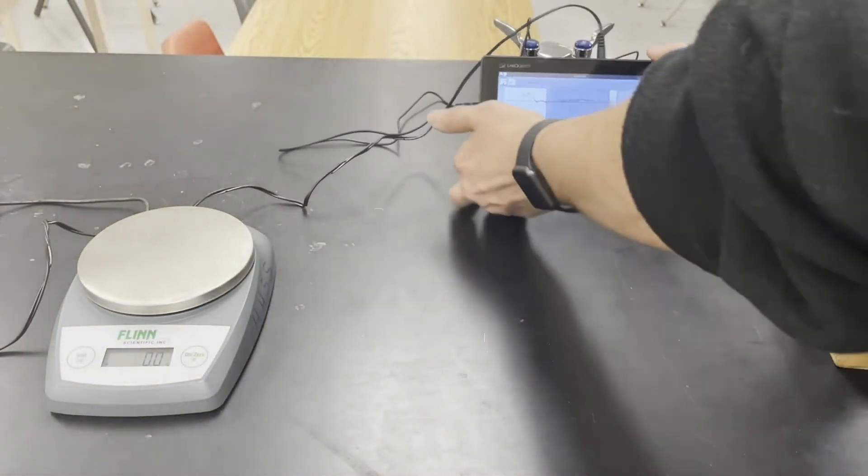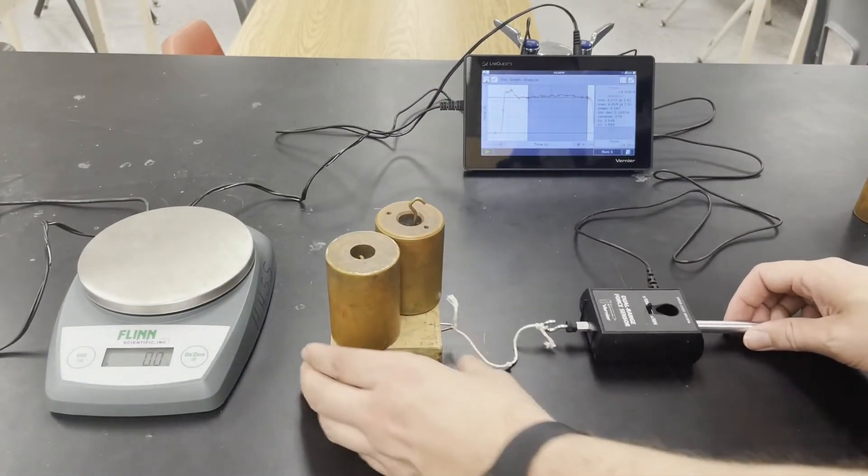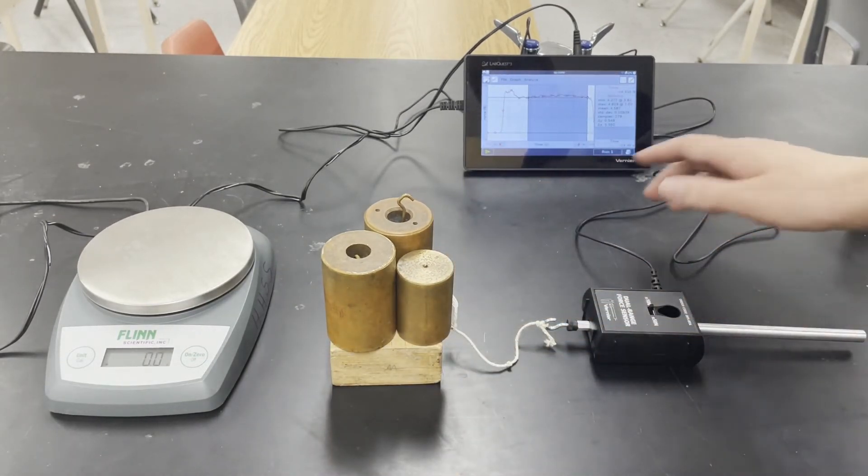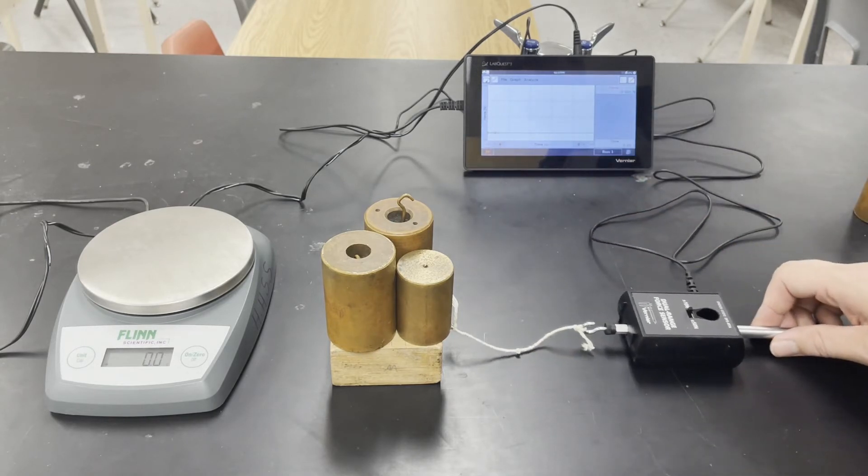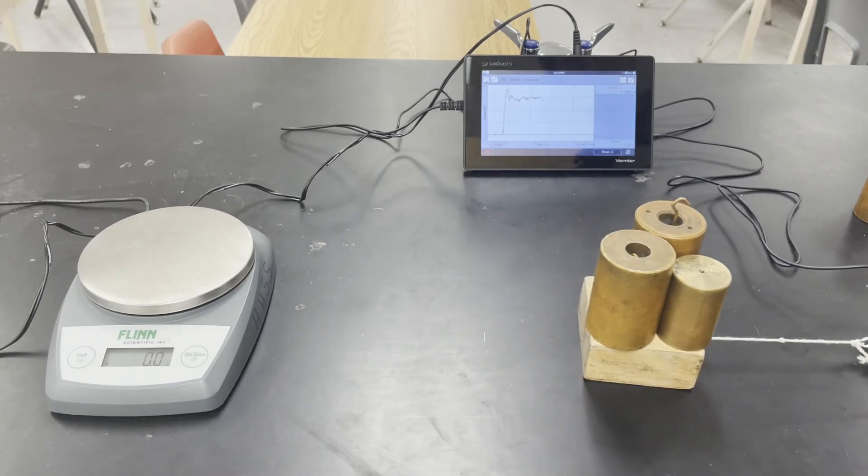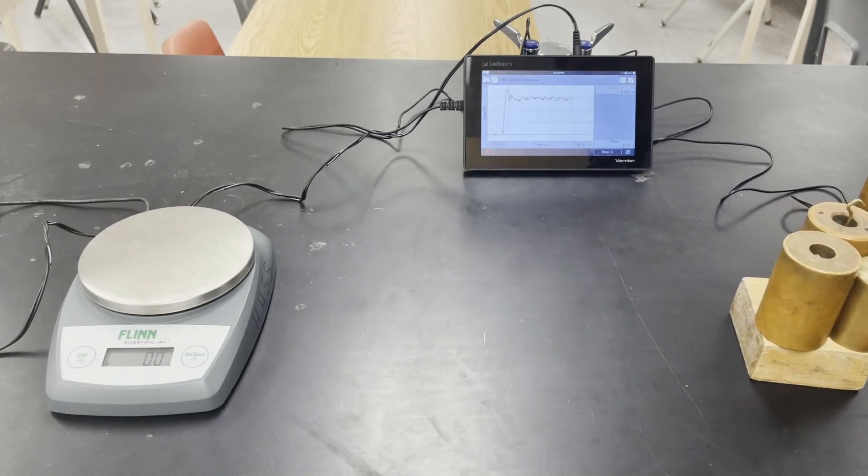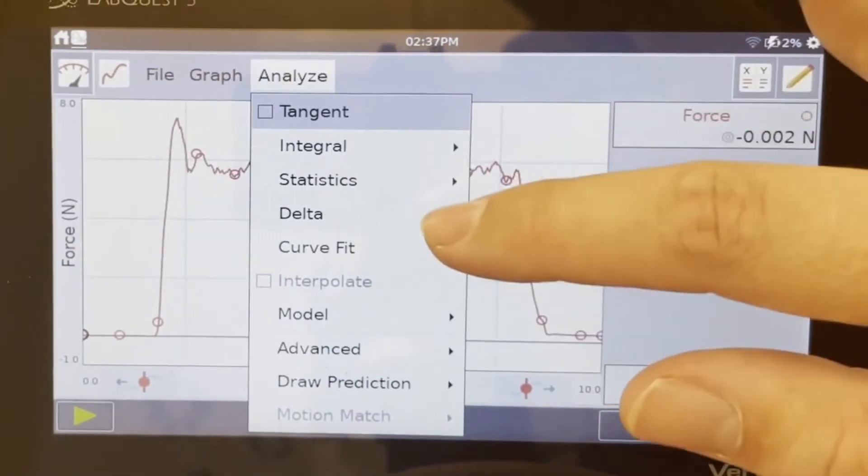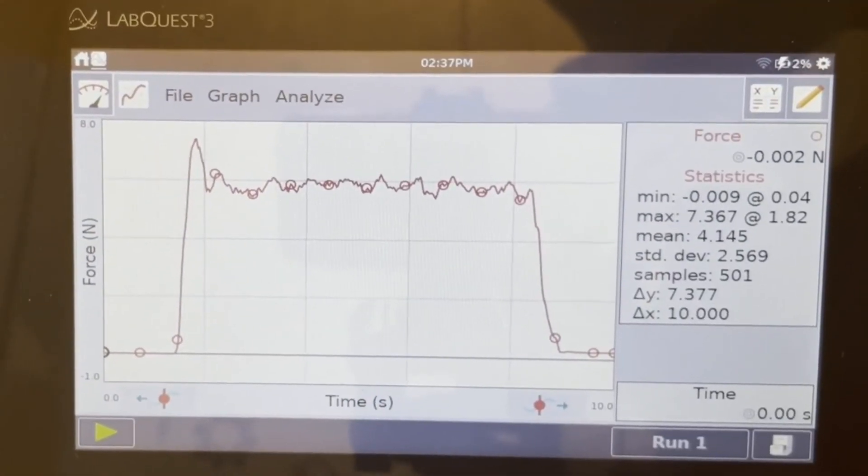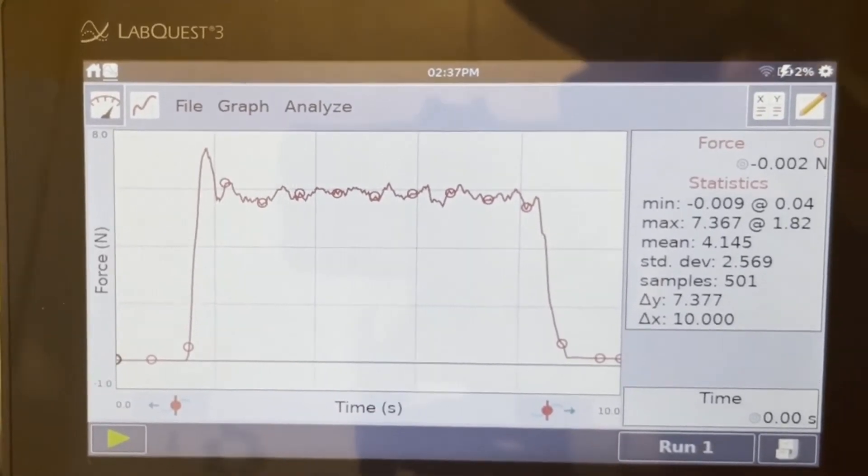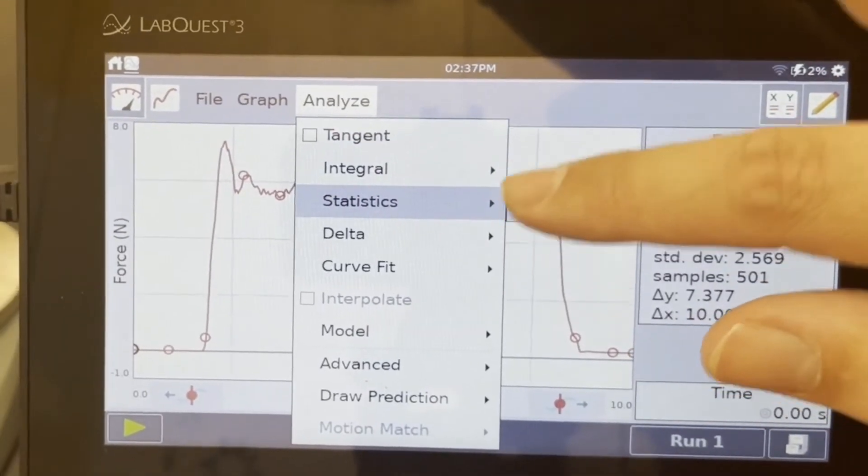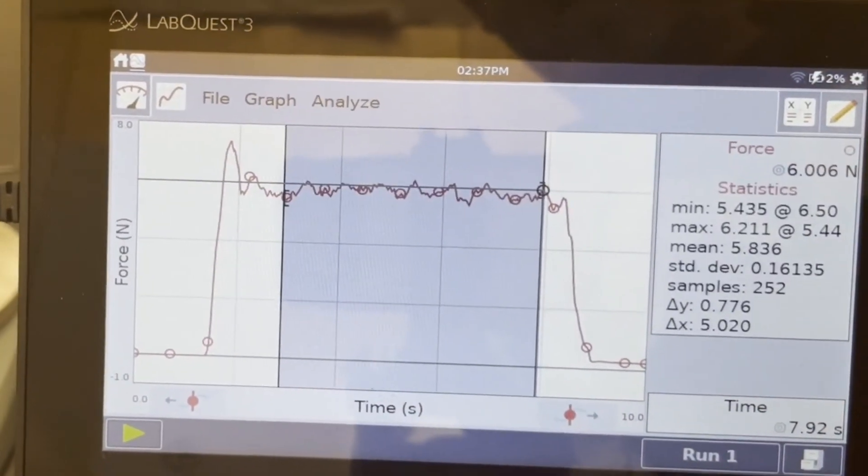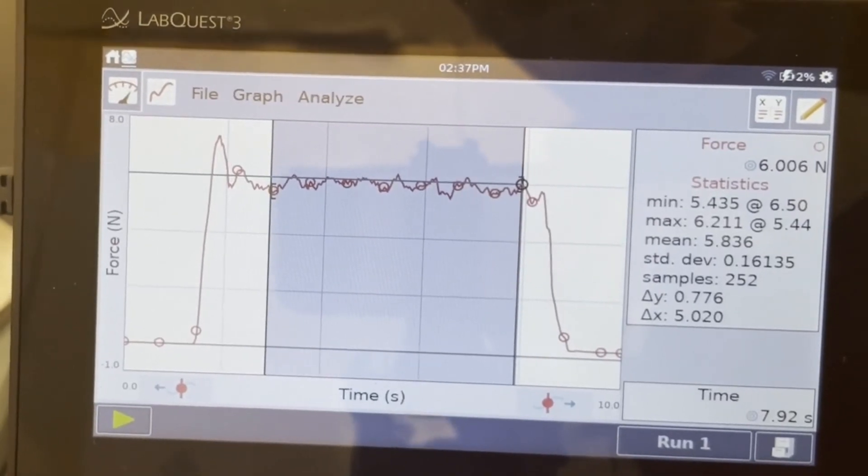Let's add more mass. I'm going to add another 500 gram weight or half a kilogram. Let's see that maximum value of static friction. It's at 7.367 newtons. And let's look at the average kinetic. The average kinetic is at 5.836 newtons.